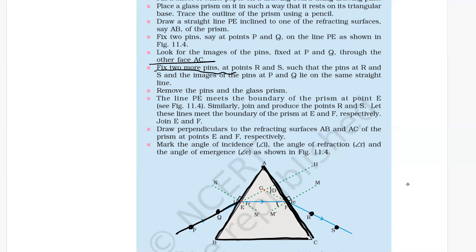Fix two more pins at points R and S such that pins R and S and the images of pins P and Q lie on the same straight line. Now remove the pins and the glass prism.